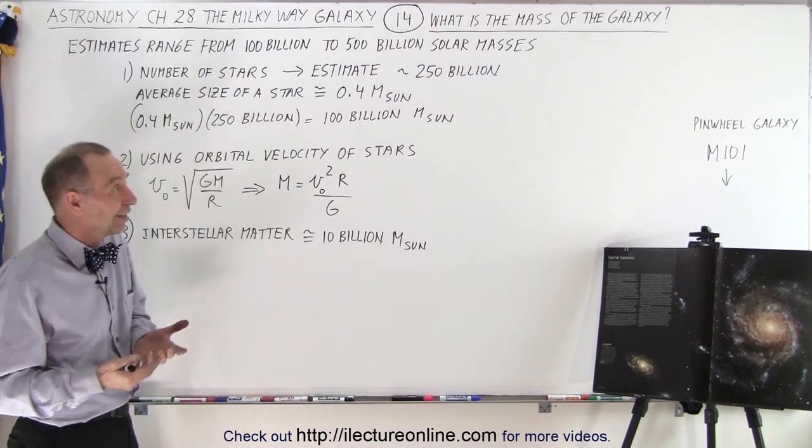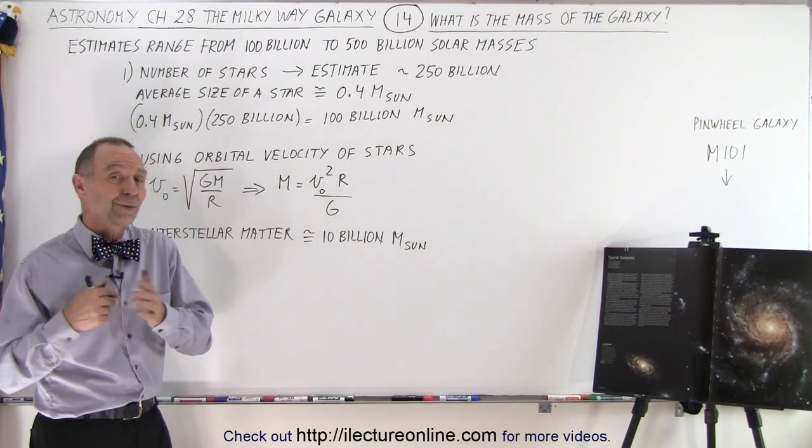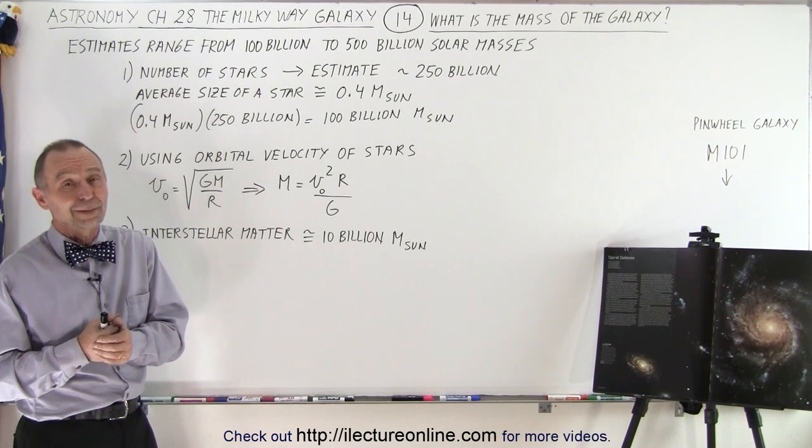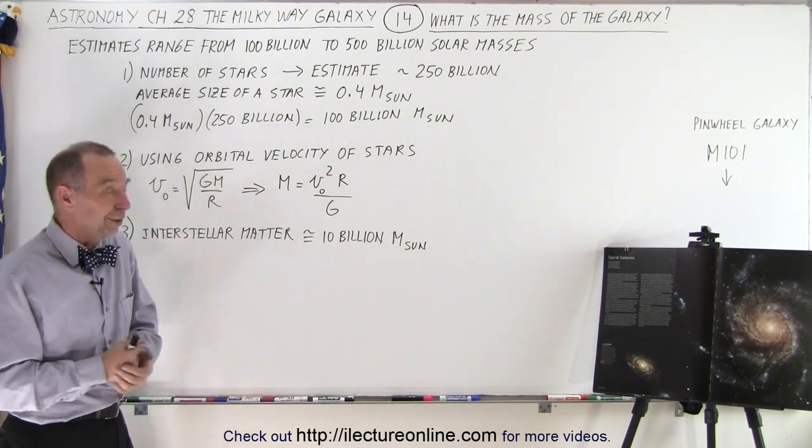It turns out, if you were to answer the question and said 100 billion times the mass of the sun, you're probably pretty close to what we think it is. And that's the answer to our question.